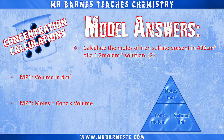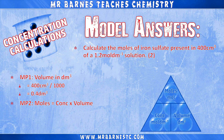Next question: this one asks you to calculate the moles, so you need to rearrange the calculation. First, work out the volume in decimetres cubed: 400 centimetres cubed divided by 1000 gives 0.4 decimetres cubed. To get the second mark, multiply concentration by volume: 1.2 moles per decimetre cubed times 0.4 decimetres cubed gives 0.48 moles to two significant figures.